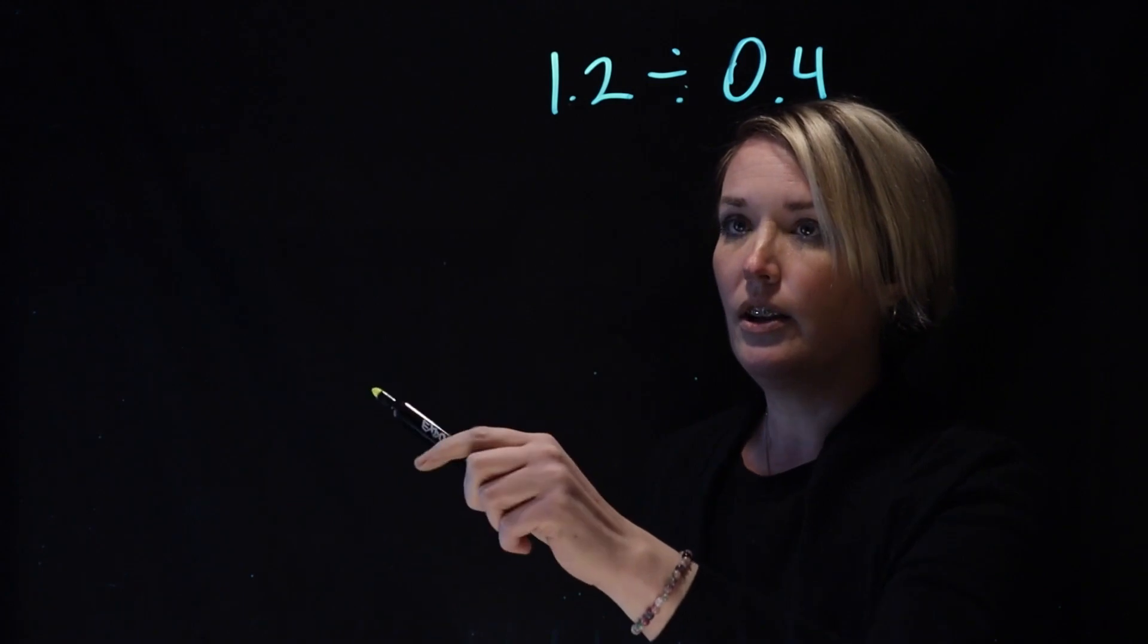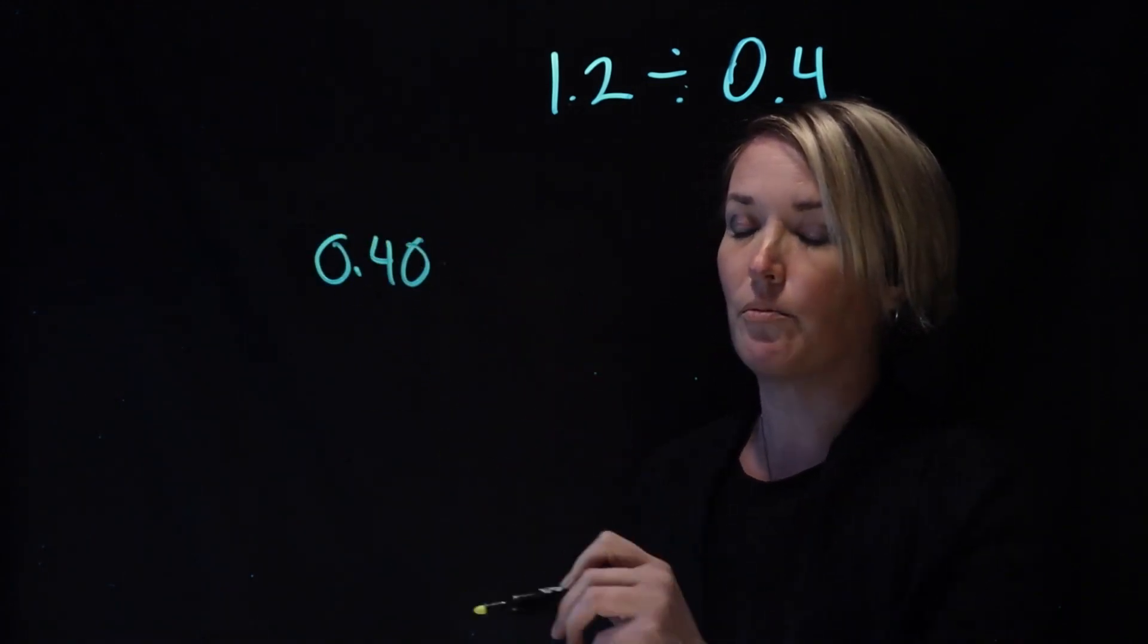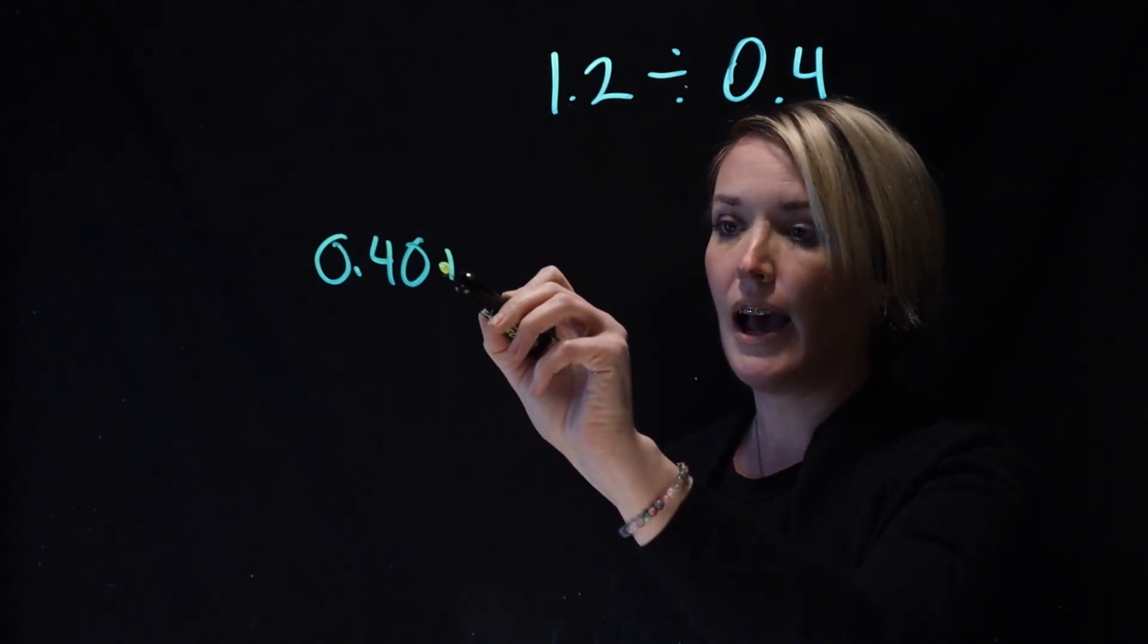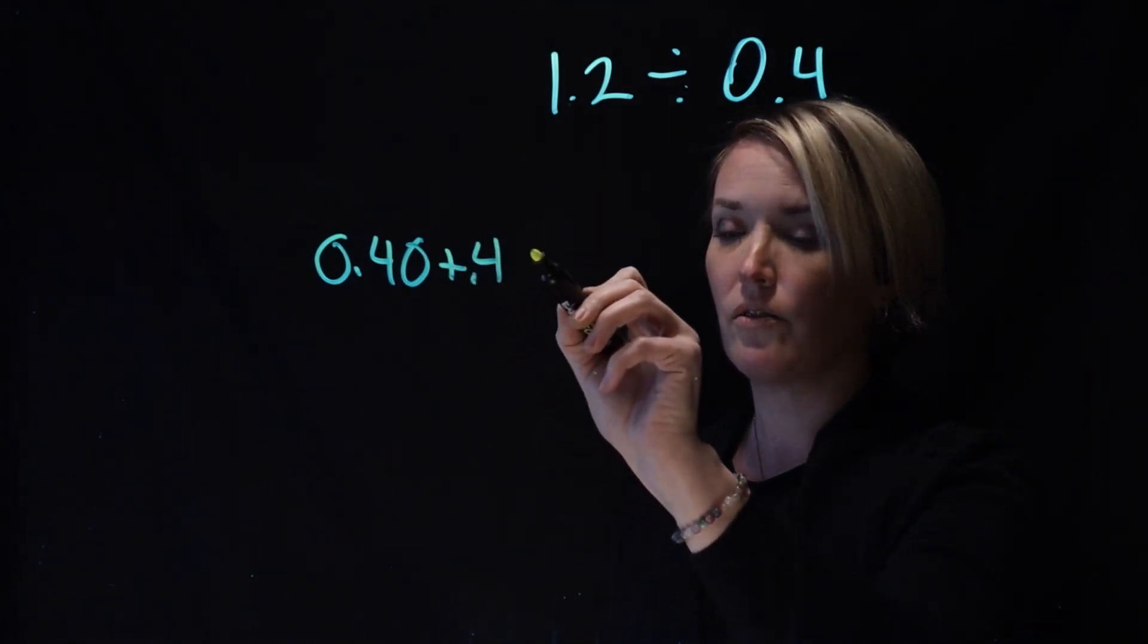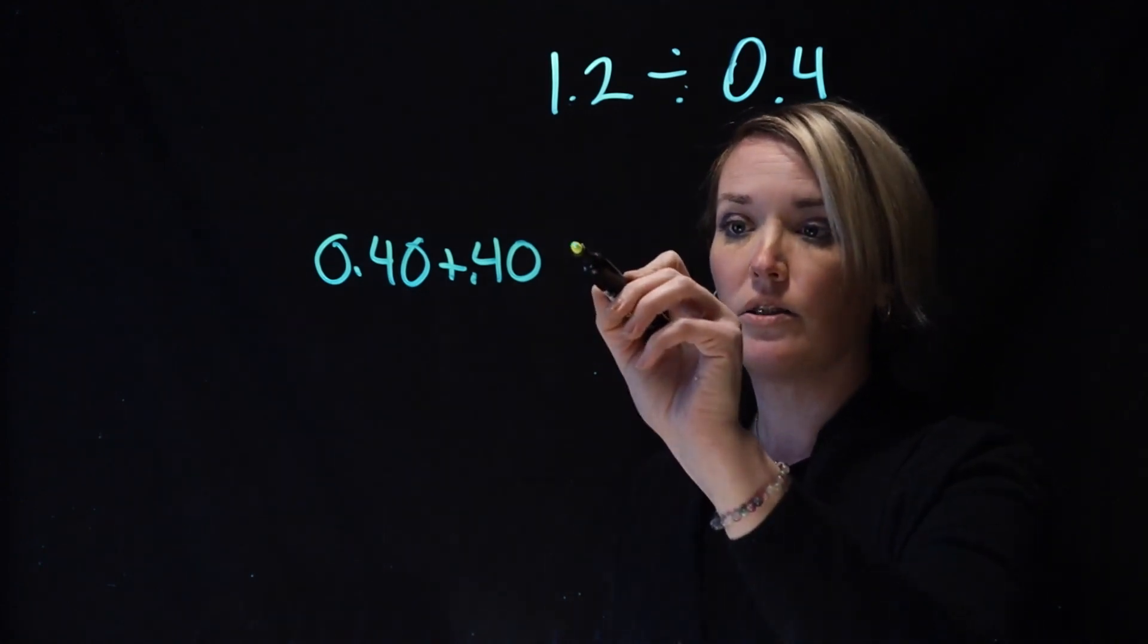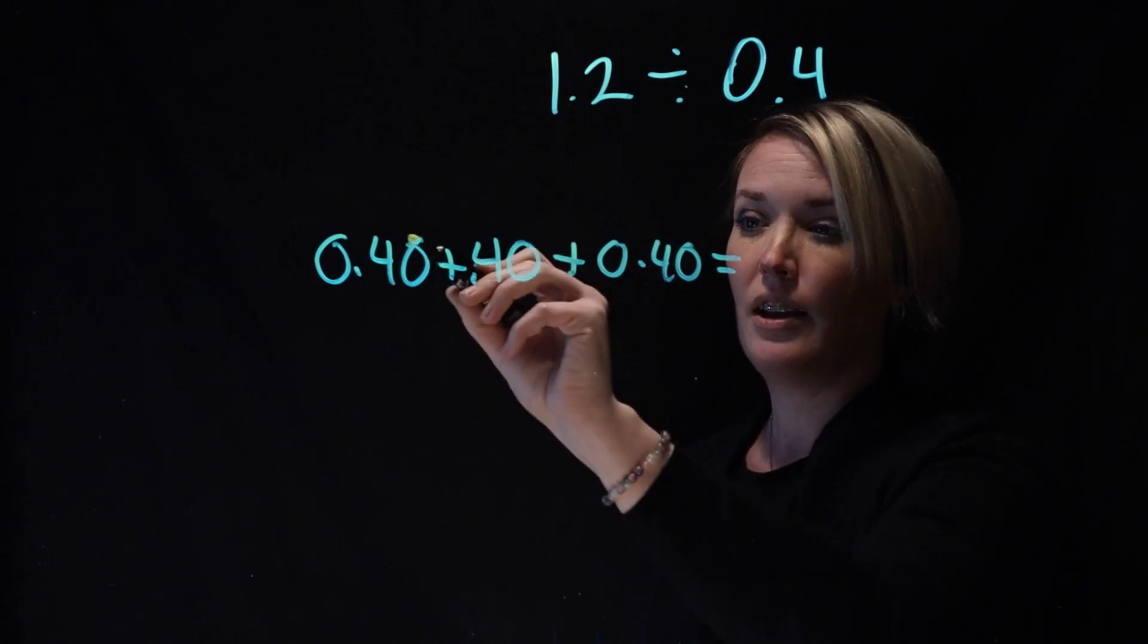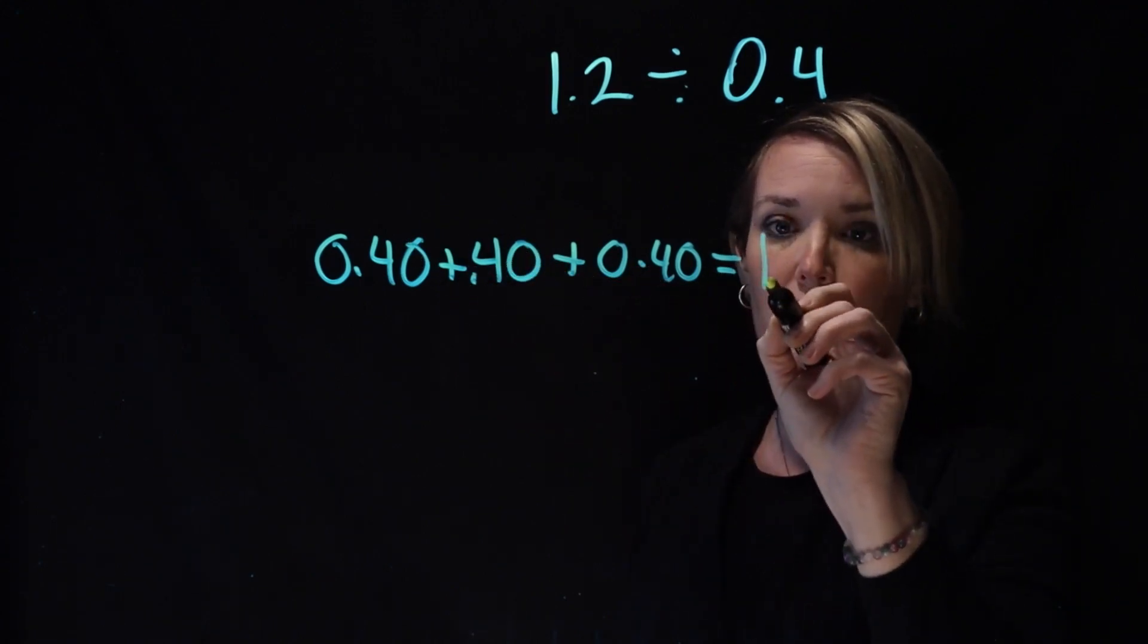Here's what she did. She started off with 40 cents and said, well, that's not enough. So she added another 40 cents and said, well, that's only 80 cents. So she added one more 40 cents and said 80 cents plus 40 cents is $1.20.